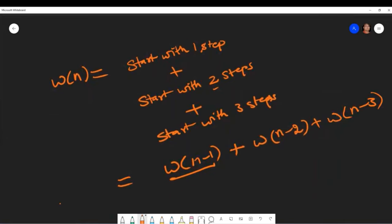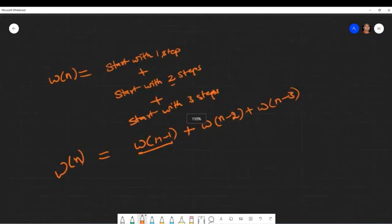My base case here would be if n equals one, then one. N equals two, then two. And if n equals three, then three. Or n equals two, it could be three, right? One-one-one, or two. You can either take two one-steps or one step of two.